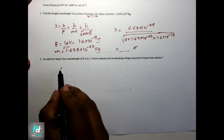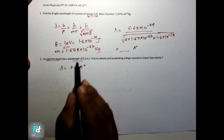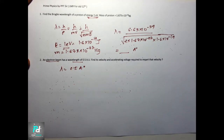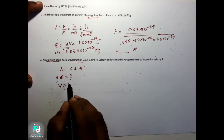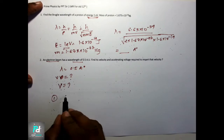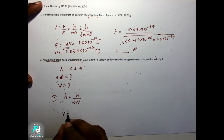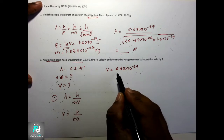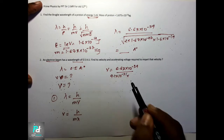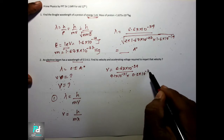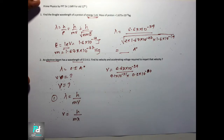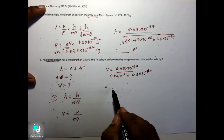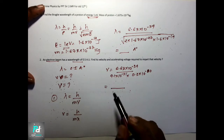Next: an electron beam has wavelength 0.5 Angstrom units. Let small v be velocity and capital V be potential. Lambda is given, so using the general formula lambda equal to h upon mv, we get small v equal to h upon m lambda. So small v equals 6.63×10⁻³⁴ upon 9.1×10⁻³¹ into 0.5 Angstrom, converting to meters by multiplying by 10⁻¹⁰. All values are known — calculate the answer.